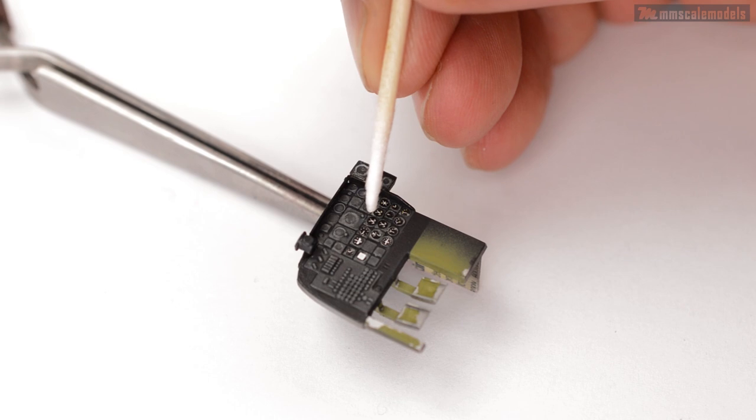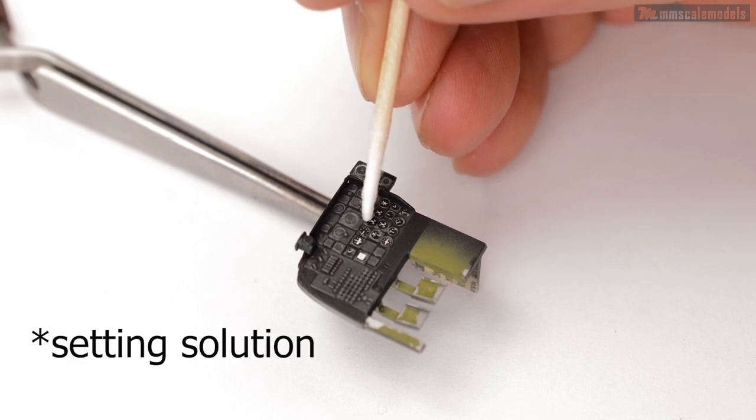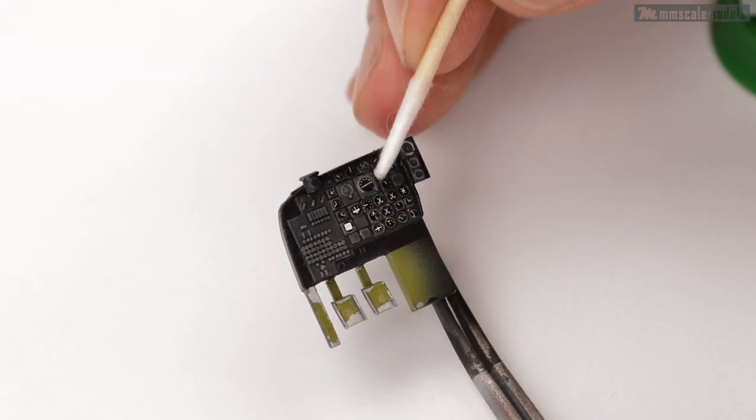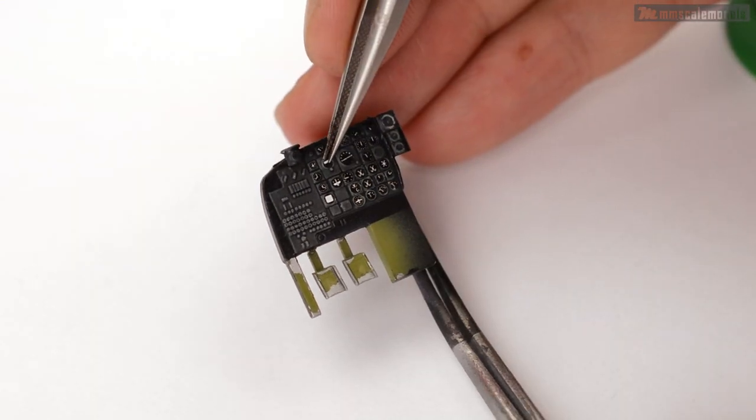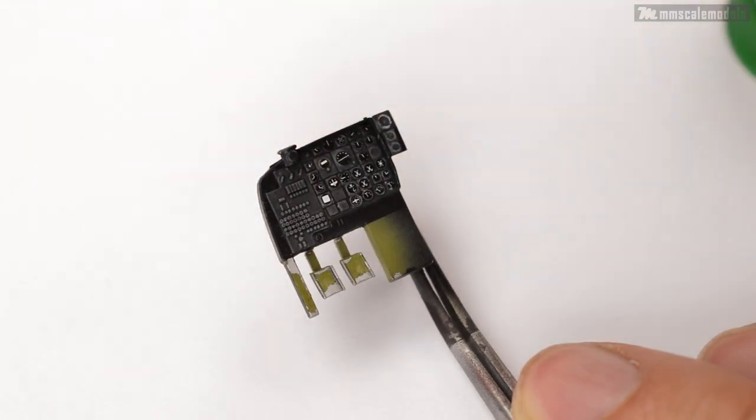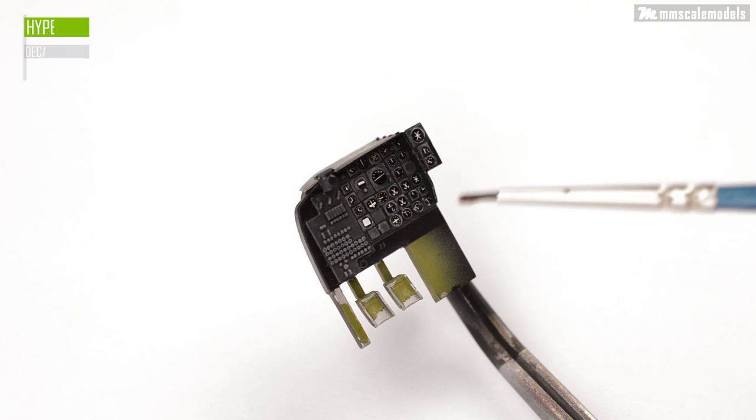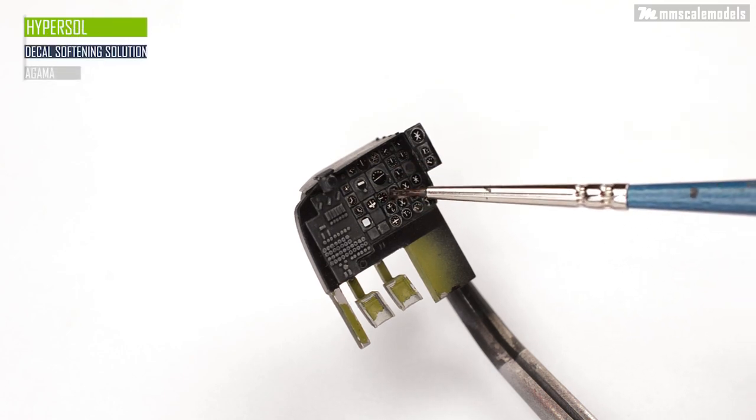Put the decal in water, put some sealant solution in the bezel, place the decal in, squeeze the excess solution out, align the decal if necessary and repeat that couple of dozen times. After all the decals are in position we can apply some softening solution and let it do its thing.